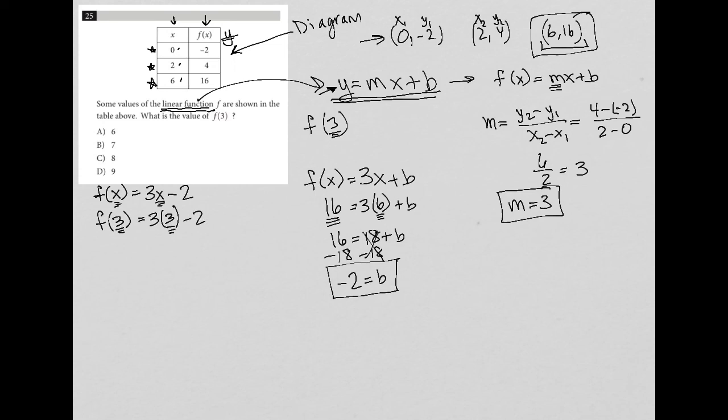So 3 times 3 minus 2. 3 times 3 is 9. So 9 minus 2 equals 7. Therefore, F(3) equals 7. The correct answer here is choice B.